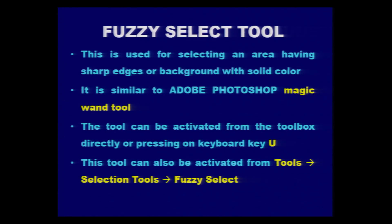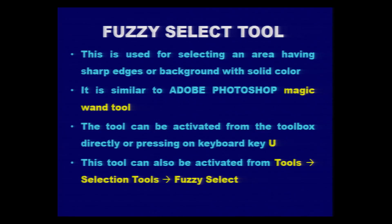If you press the keyboard key U, the fuzzy select tool will be activated. Another way to activate it is through the menu bar — pick the Tools option, then Selection Tools, and further select Fuzzy Select. These are the different ways through which you can activate the fuzzy select tool.